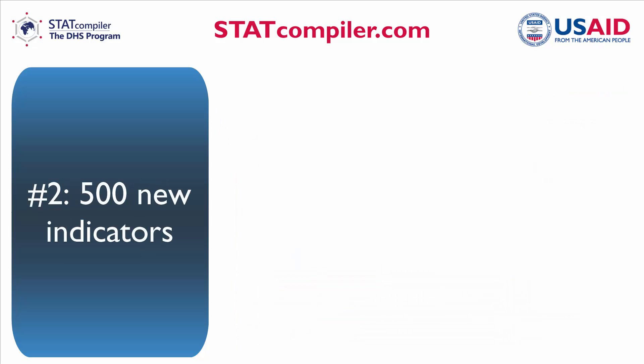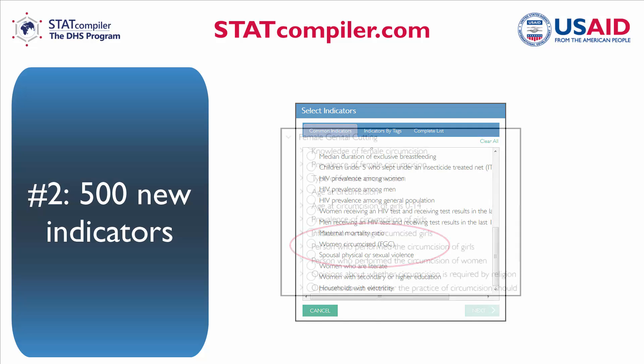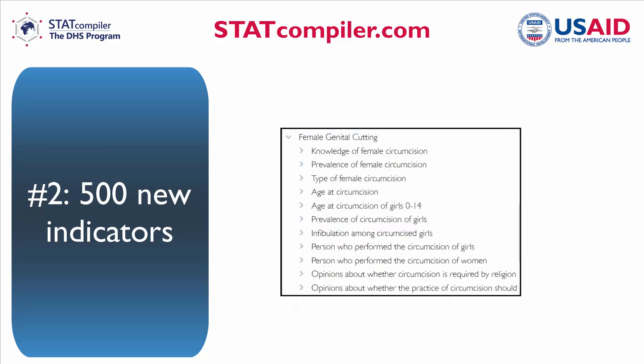Number 2. The new STATcompiler contains more than 500 new indicators, including maternal mortality ratio, domestic violence indicators, female genital cutting, and many more. Explore the full list.